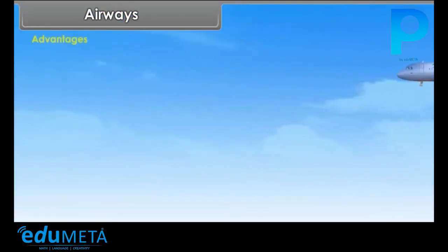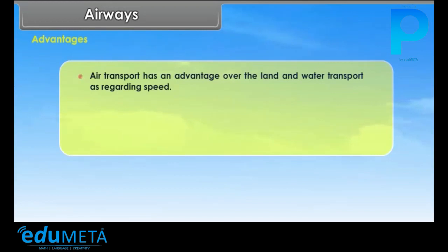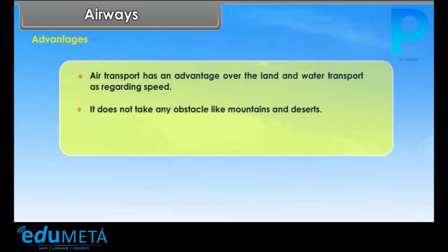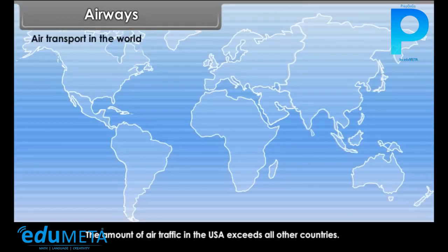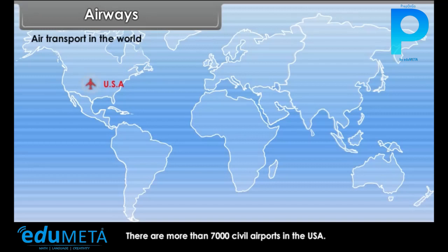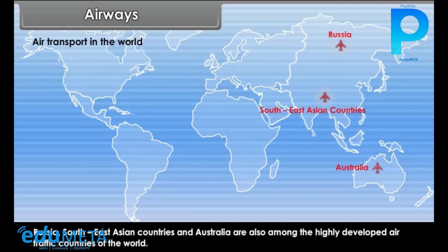Airways — Advantages: Air transport has an advantage over land and water transport in terms of speed. It does not face any obstacle like mountains and deserts. Costly and perishable goods can be sent to their destination in no time. Air Transport in the World: The amount of air traffic in the USA exceeds all other countries, with more than 7,000 civil airports. Great Britain, France, Germany, and other European countries have also developed air traffic linking many countries of the world. Russia, Southeast Asian countries, and Australia are also among the highly developed air traffic countries of the world.